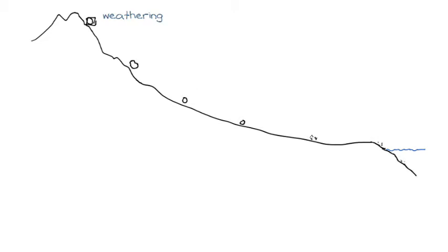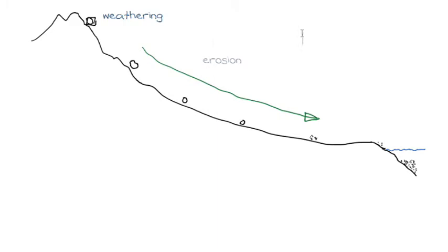Eventually they reach the ocean and are deposited to create layers of sediments. The process is called erosion as we move our sediments or small pieces of rock towards the ocean. Once we reach the ocean where the sediments are deposited, the process is called deposition.